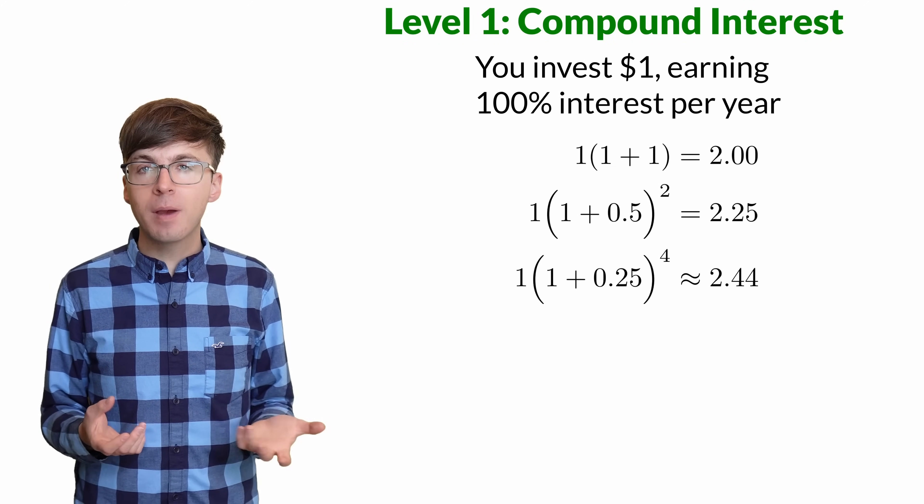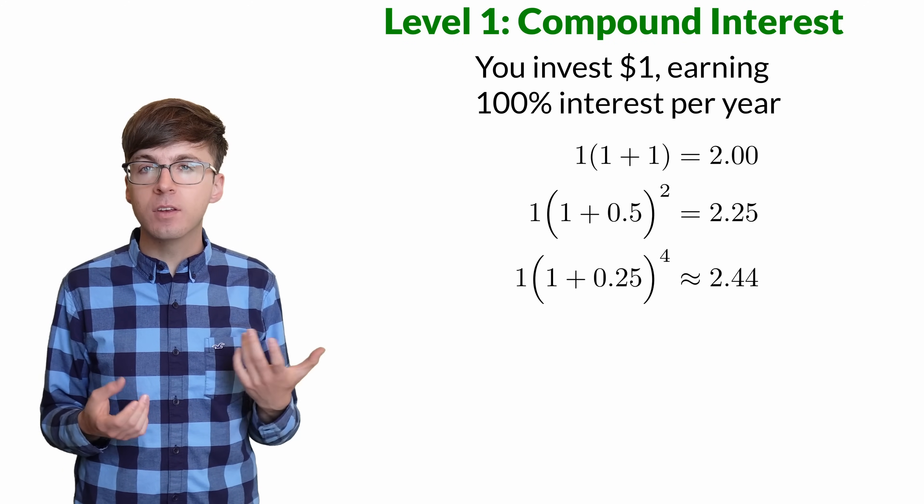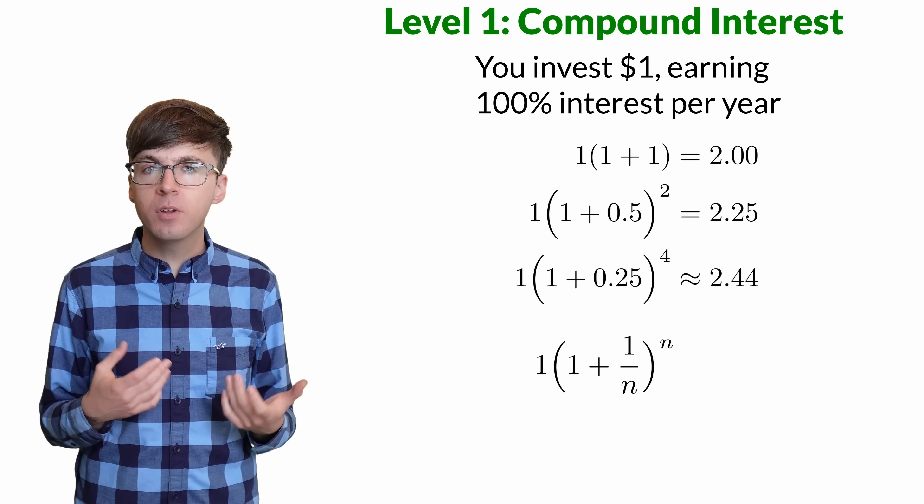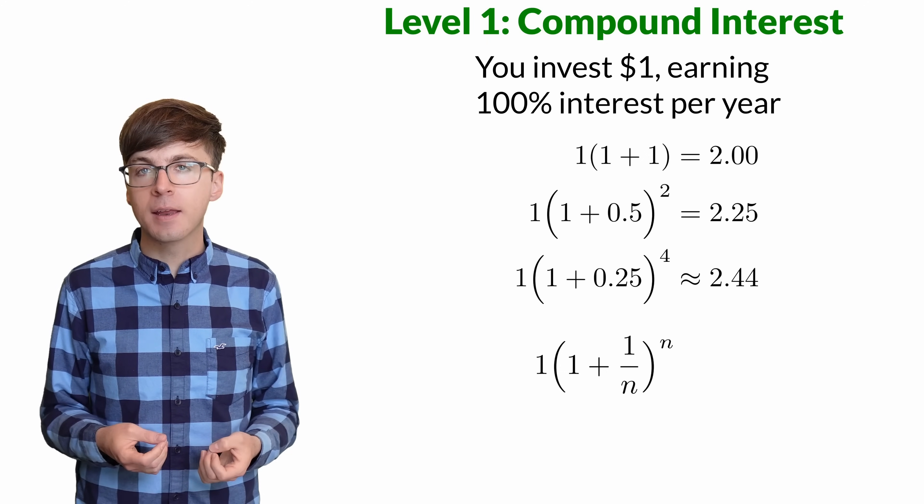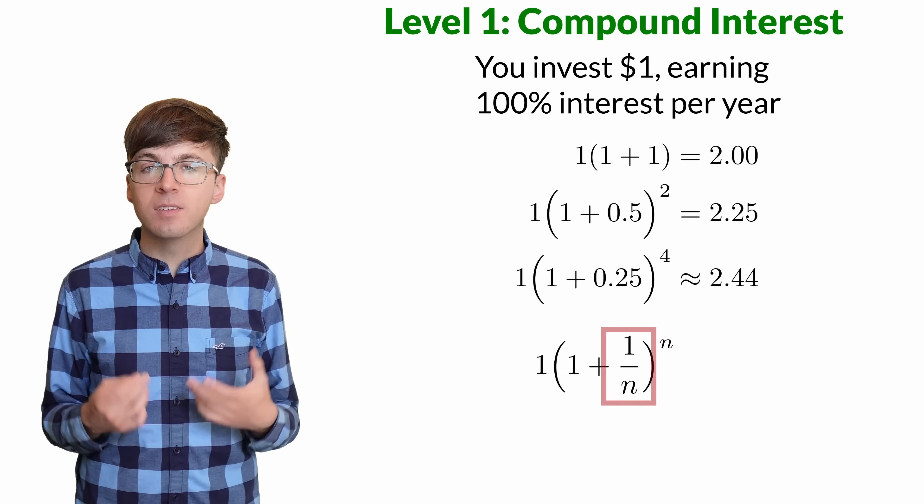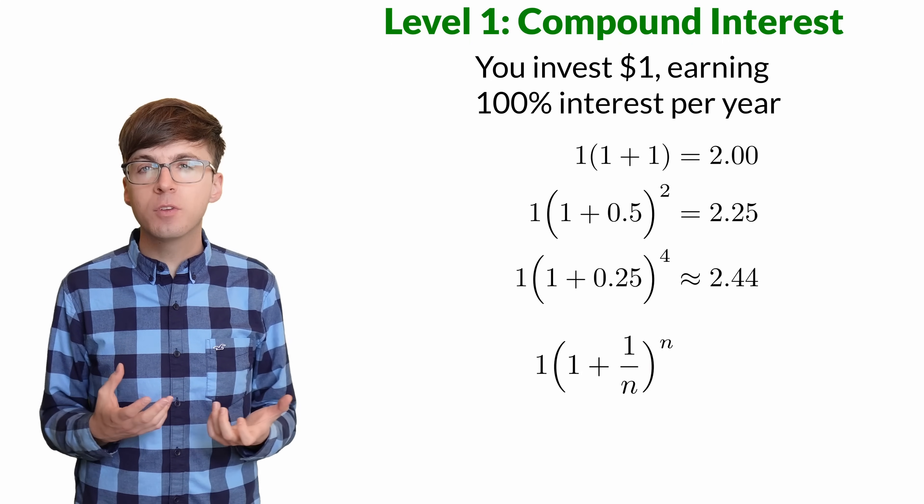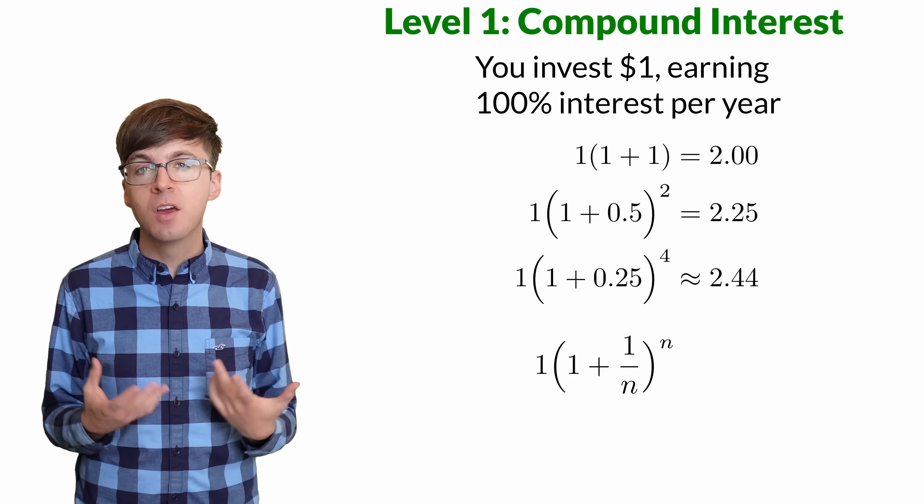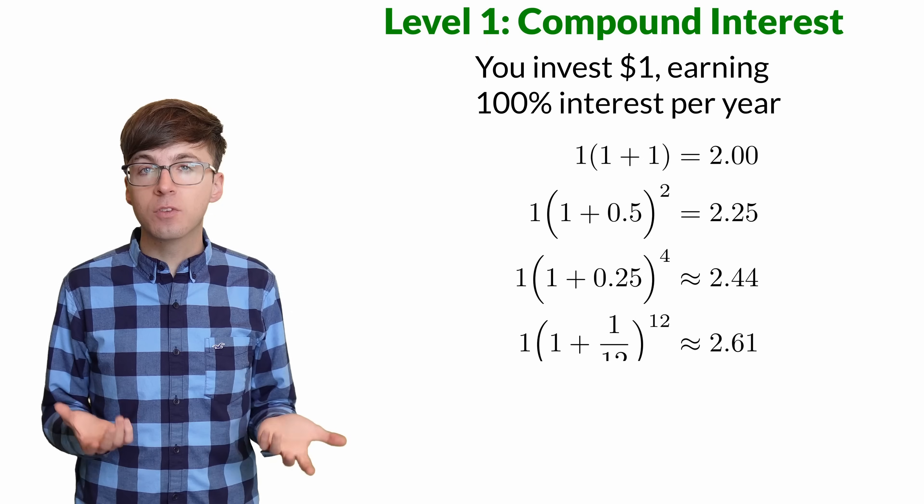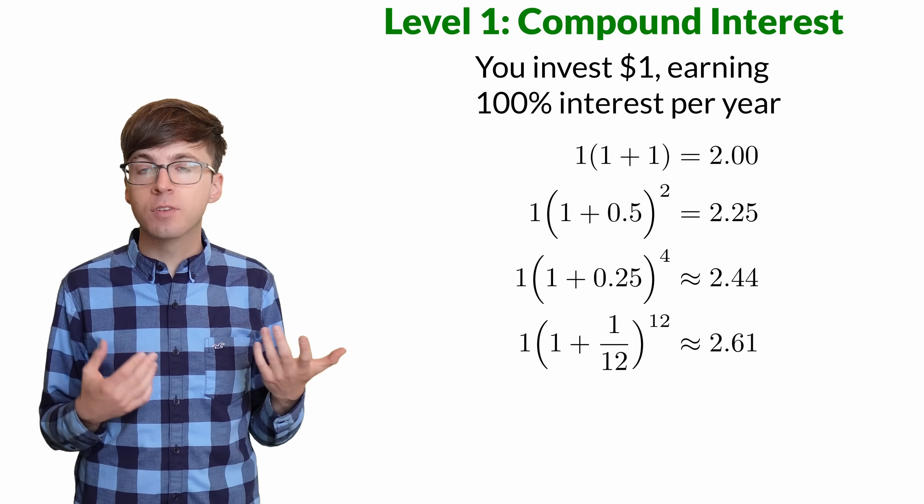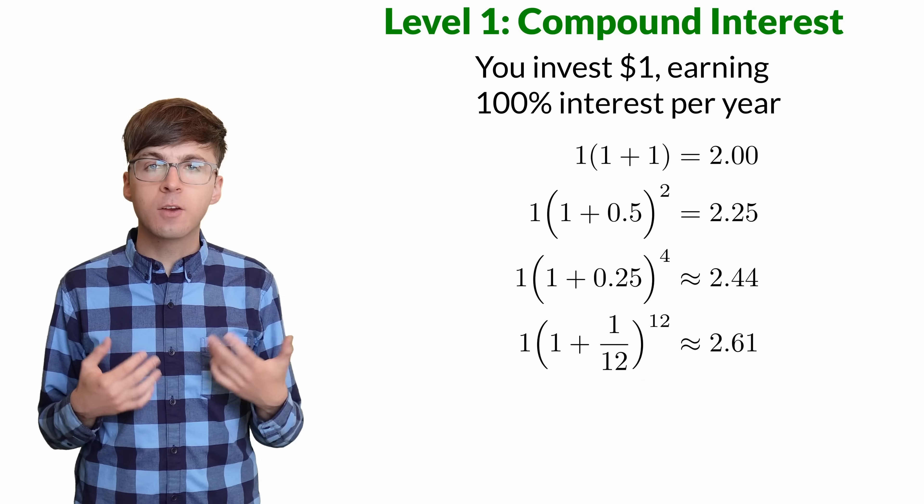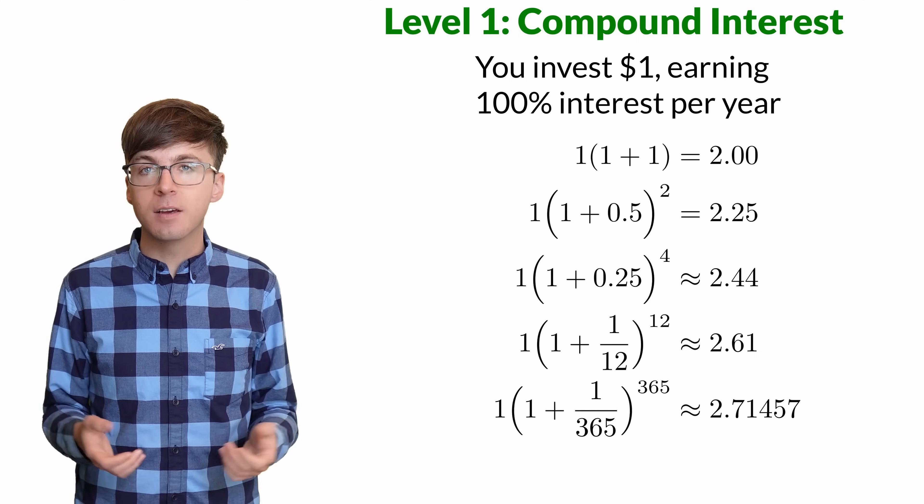If interest is compounded n times per year, then your ending balance is $1 times 1 plus 1 over n to the power n. The 100% interest is divided by n to get the interest for each period, and then we multiply by this factor n times, 1 for each period. We can plug in n equals 12 to see your balance if the interest is compounded monthly, or n equals 365 for daily compounding.